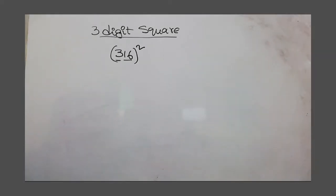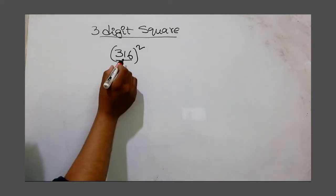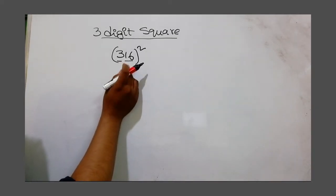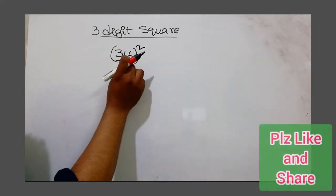What are you doing? This is the recent square number. What are the same calculations? We are talking about 16 and 33. This is the last one.